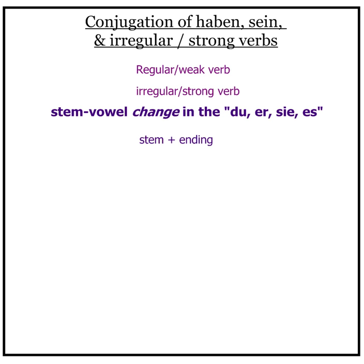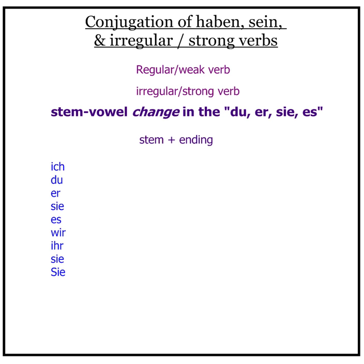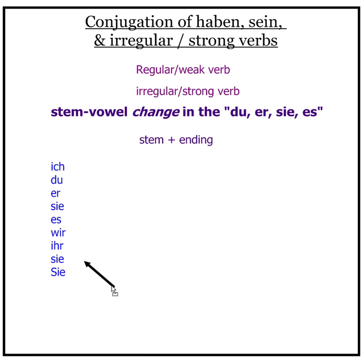Remember, we conjugate to the pronouns in this order: ich, du, er, sie, es — wir, ihr, sie, Sie.